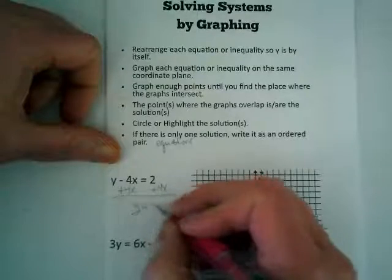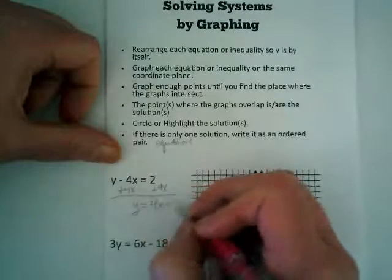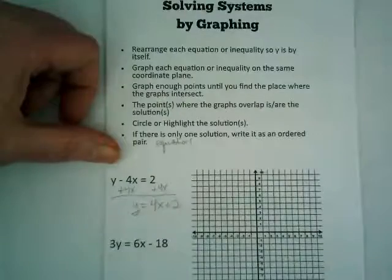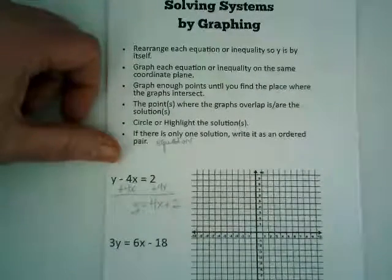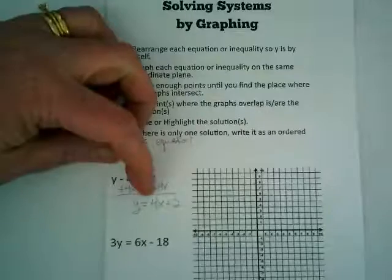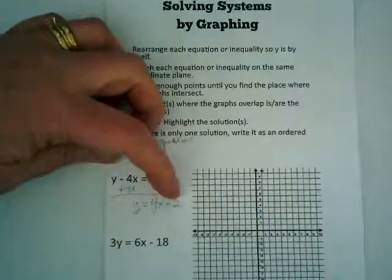Please do that with me. That gives us y is equal to 4x plus 2. I put the 4x right after the equal sign because we're going to be graphing this. And that puts the slope in the right place and the y-intercept in the right place.